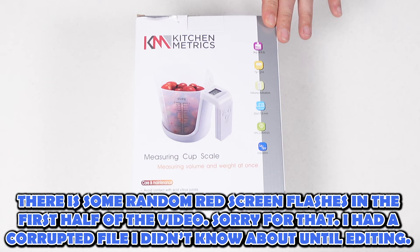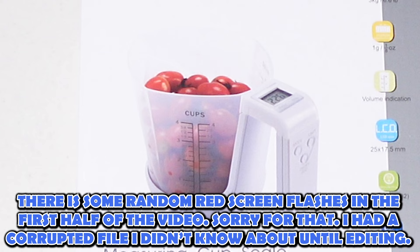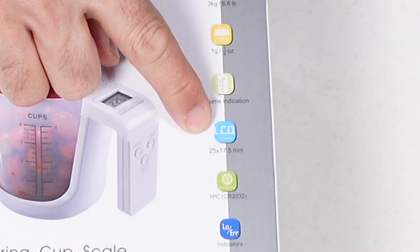This is the Kitchen Metrics measuring cup scale. You can see by the picture that this is basically a funny shaped scale with a measuring cup built right into it. It's got a maximum weight of 6.6 pounds. It can measure in grams and ounces and also volume in certain cases. It's got a 25 by 17 and a half millimeter LCD screen so that's pretty tiny. And it comes with the battery.